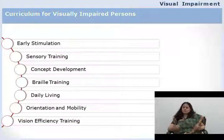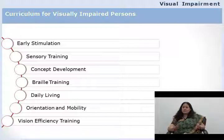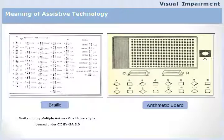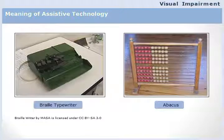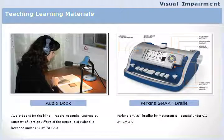For a child who has some vision, the most important thing is vision efficiency training — through structured intervention, the child is trained to use residual vision effectively and productively. There are many assistive devices available for visually impaired students: a brailler, braille slate, Taylor frame for math, and an abacus for math. For everything there is a solution available — the key is to train these children to use these devices effectively so they can function normally in the classroom.